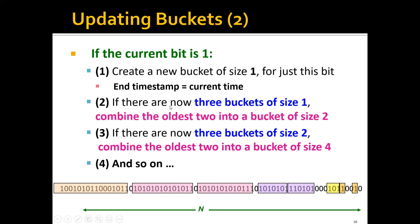The second step is to check if there are now three buckets of size one — since we can have at most two buckets of the same size, we combine the oldest two buckets of size one into one bucket of size two. And since we have a new bucket of size two, we check if there are now three buckets of size two. If so, we combine the oldest two into a new bucket of size four, and so on until we reach the beginning of the window.